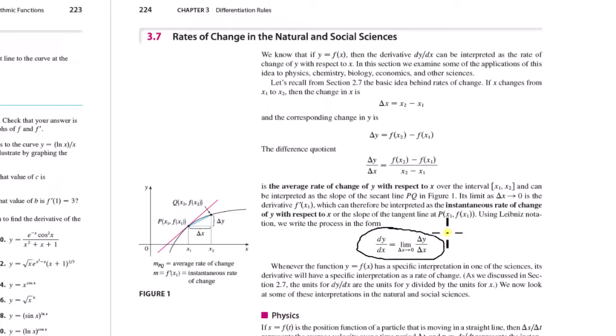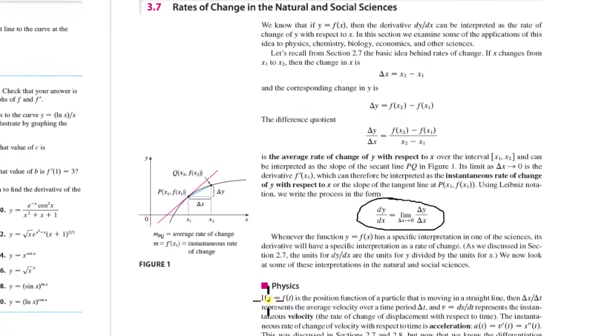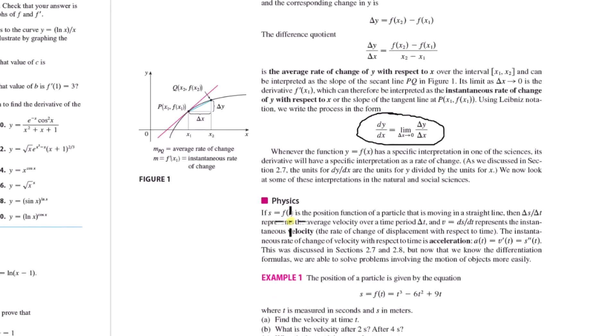For non-math majors, this form — the limit as delta x approaches 0 of delta y over delta x — is most commonly applied outside of calculus. The classic definition, the limit as h approaches 0 of [f(a+h) minus f(a)] over h, is that's the derivative at its most fundamental. But for applications outside of calculus, you think of the derivative as the rate of change of one variable with respect to another. In scientific journals, you see this difference quotient form a lot.